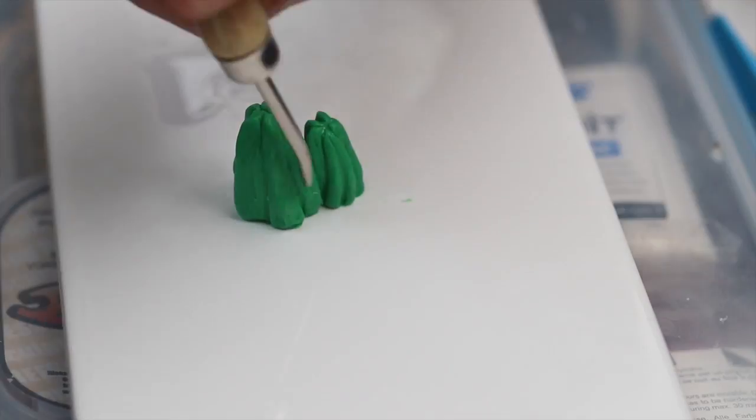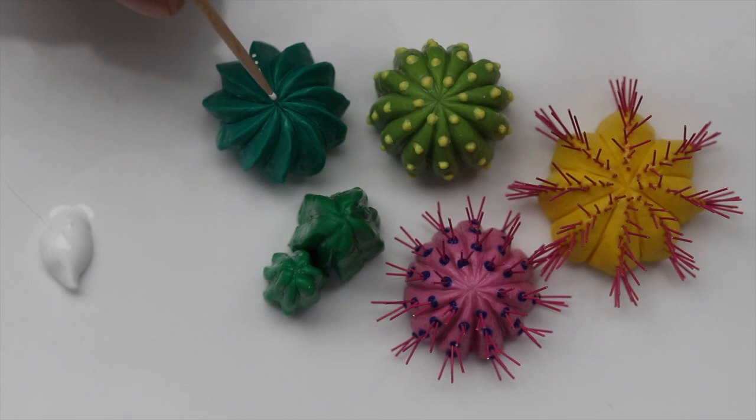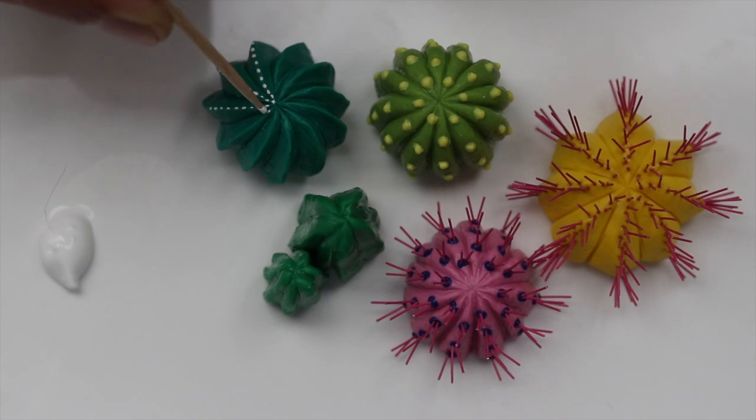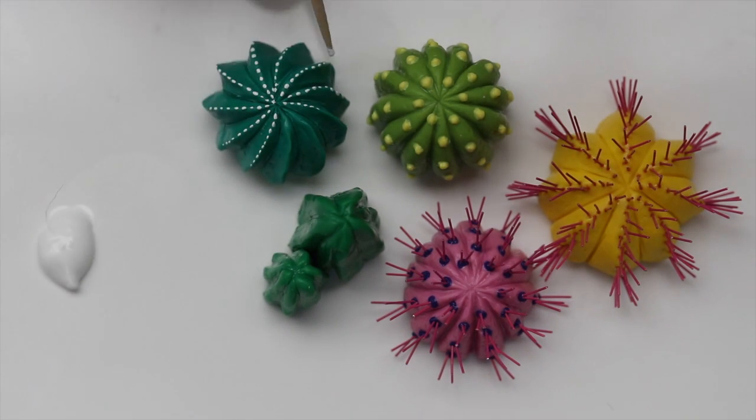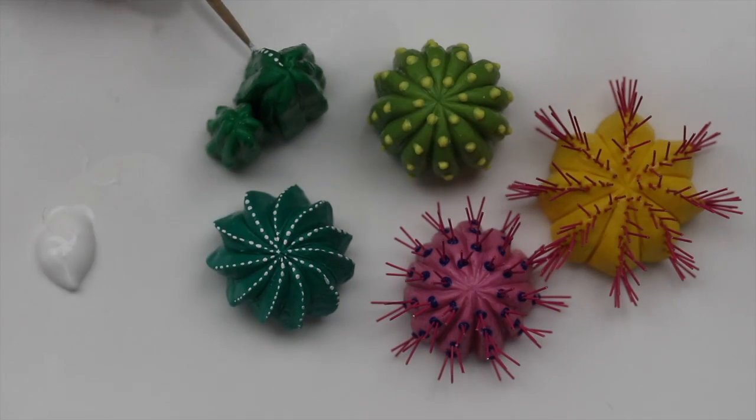And lastly after baking and letting everything cool off I proceed to paint everything. So for those that didn't have any spikes I simply added dots of white paint to give the illusion of spikes and to show the areoles. I simply used a toothpick to add the white dots everywhere so it's rather an easy process.